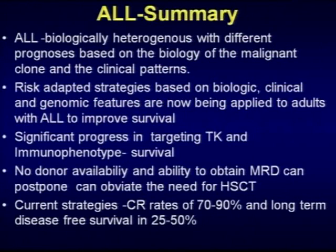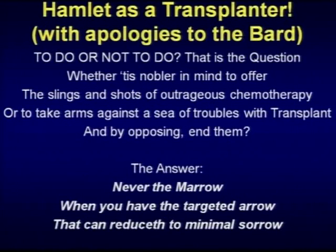In summary, risk-adapted strategies have changed the outcomes. Significant progress in targeting the tyrosine kinase and immunophenotype has improved survival. For patients with no donors, the ability to obtain MRD negativity can postpone or obviate the need for transplantation. So, in Hamlet's words — apologies to the bard — to do or not to do, that's the question. Whether it's nobler in mind to offer the slings and shots of outrageous chemotherapy, or to take arms against a sea of troubles with transplant. The answer: never the marrow, when you have the targeted arrow — that can reduce it to minimal sorrow.